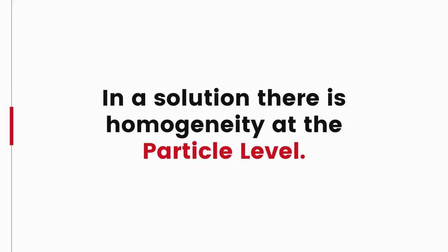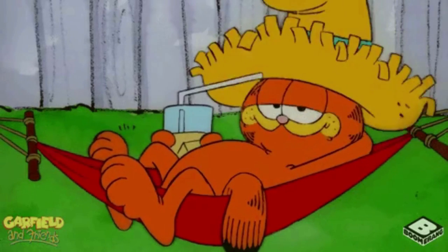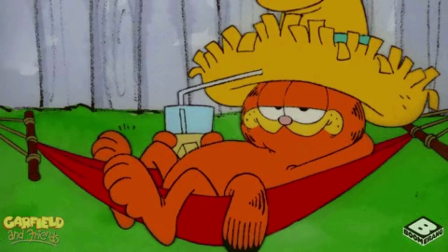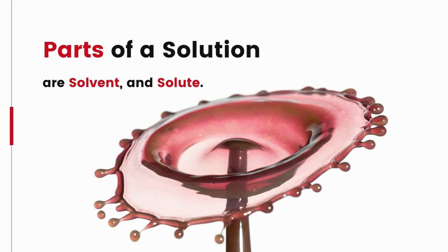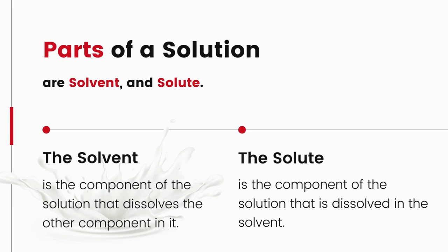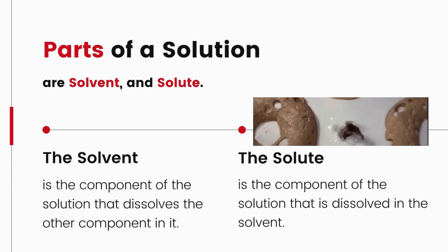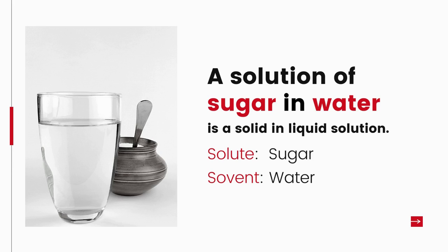In a solution there is homogeneity at the particle level — for example, lemonade tastes the same throughout, showing that particles of sugar or salt are evenly distributed. A solution has a solvent and a solute as its components. The component that dissolves the other component, usually present in larger amount, is called the solvent. The component that is dissolved, usually present in lesser quantity, is called the solute. For example, in a solution of sugar in water, sugar is the solute and water is the solvent.